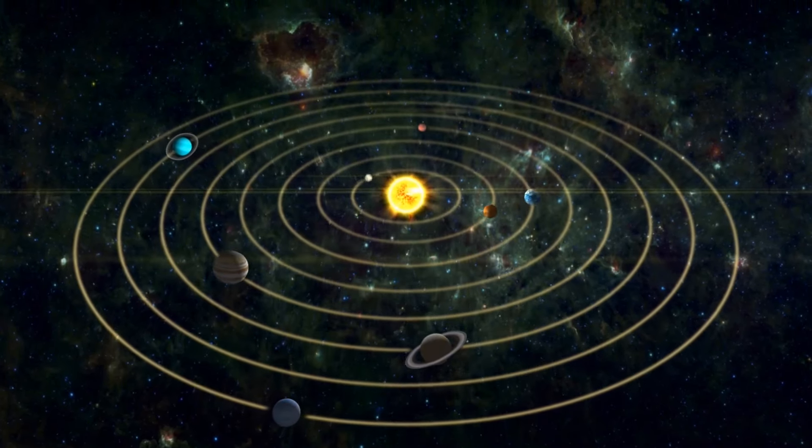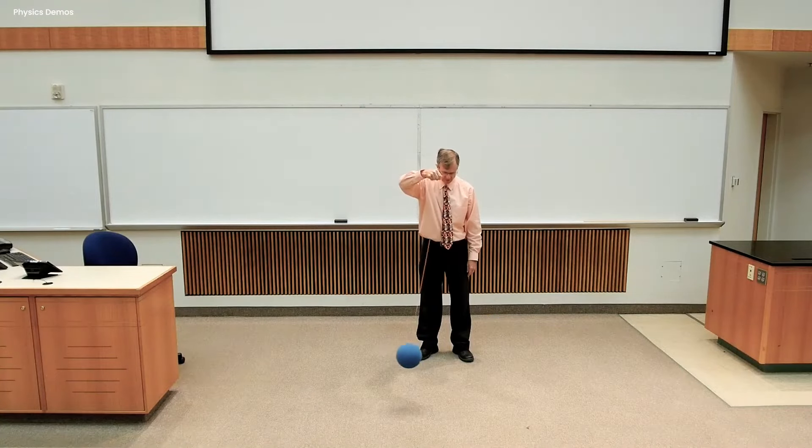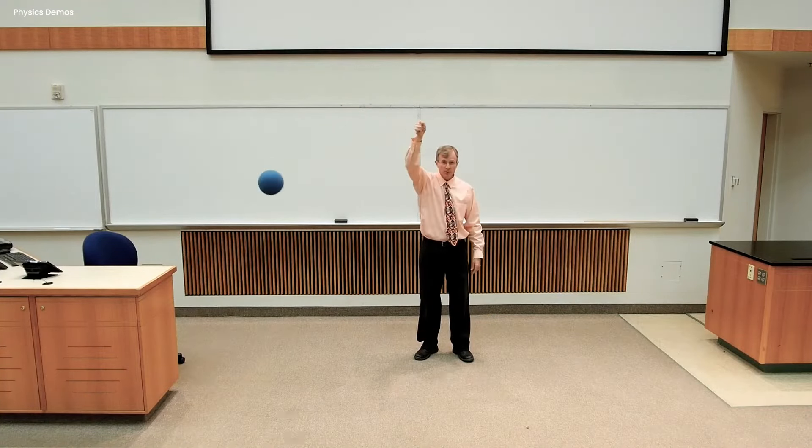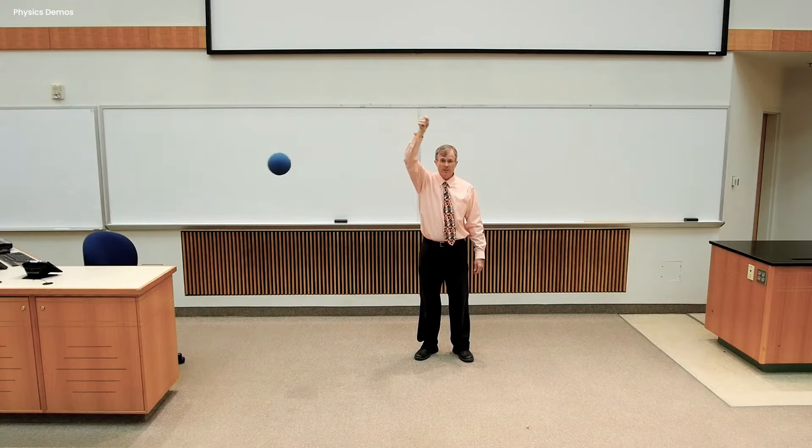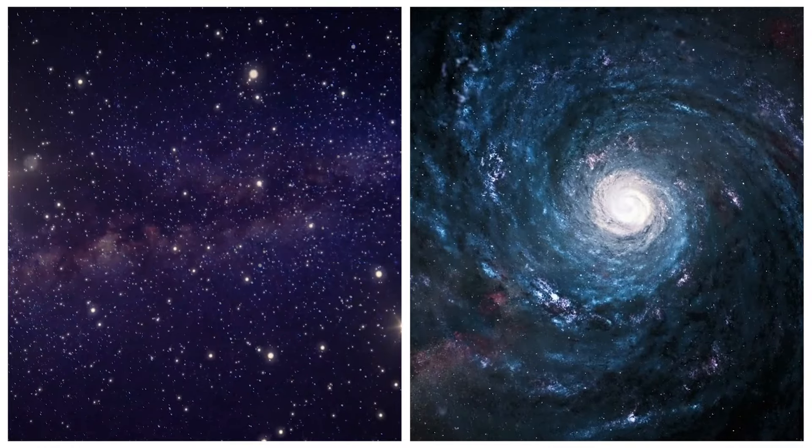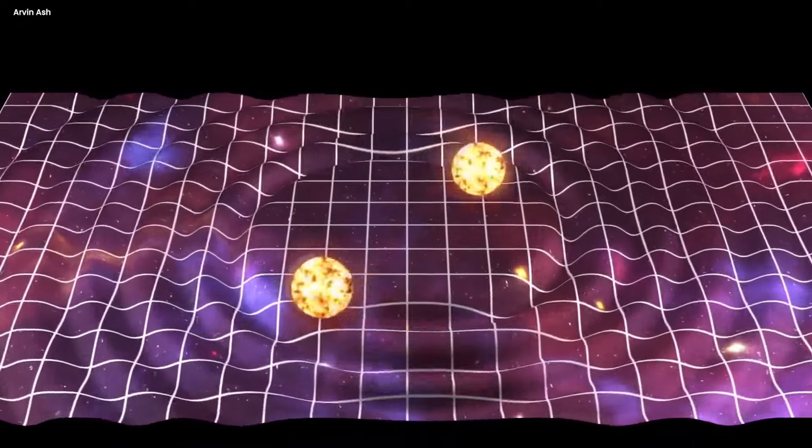These orbits are usually close to circles, and anything moving in a circle needs a force pulling it inwards. Think about swinging a ball on a string. The faster you spin it, the tighter you have to grip the string to keep it from flying off. Gravity acts like that invisible string for stars and galaxies. The point is, the faster something moves in a circle, the stronger the inward pull needs to be.